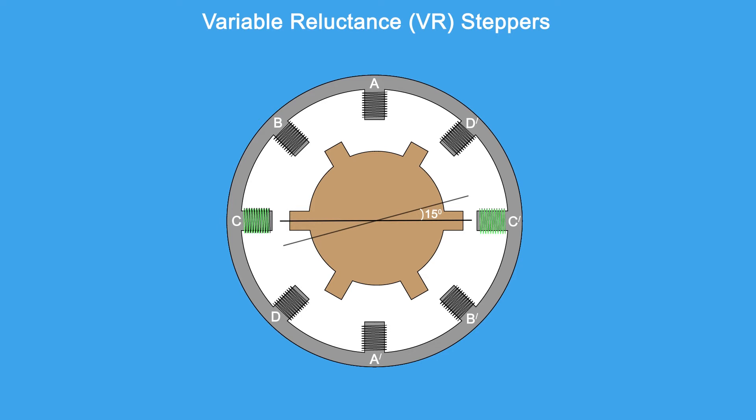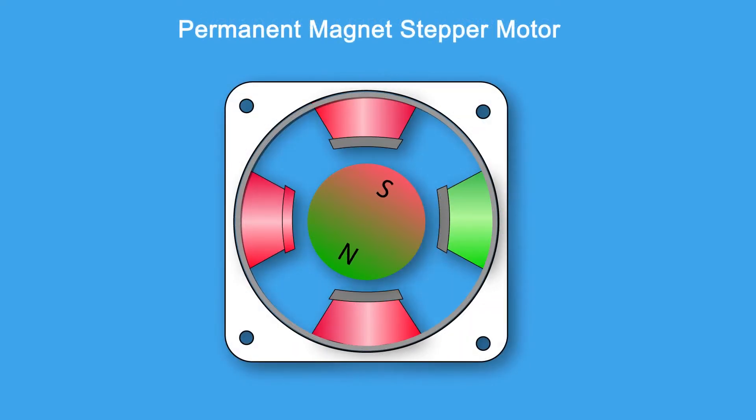The permanent magnet stepper has permanent magnet rotor which is driven by the stator windings. Stator windings create opposite polarity poles compared to the poles of the rotor and the result is the movement of the rotor.